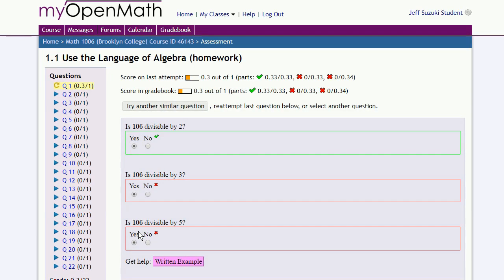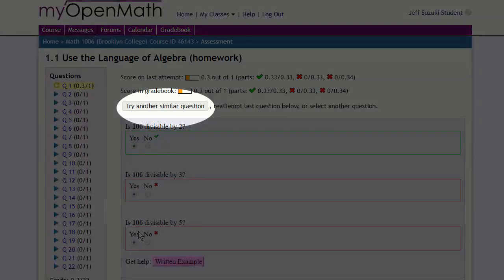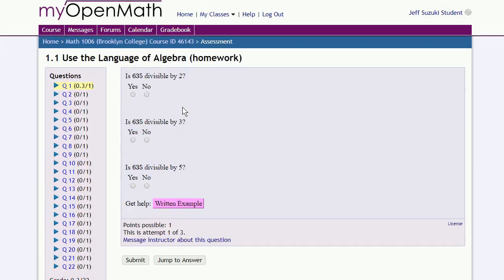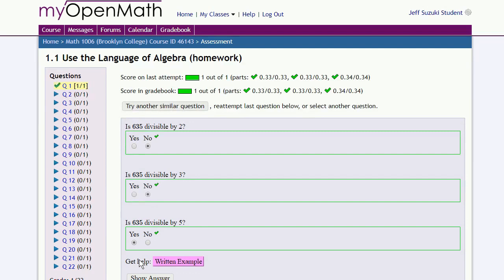However, since this is a homework problem, we always have the option of retrying a similar question. So we can try a similar question by clicking on this button. And we'll answer the new question. Click submit. And this time we got the question correct. And a check mark appears next to the correctly answered question.